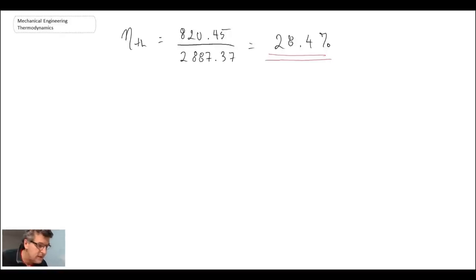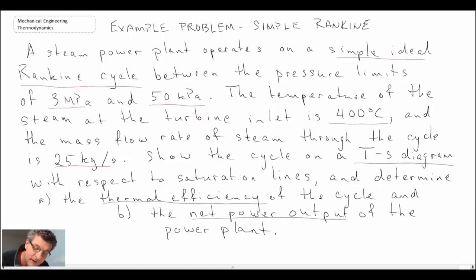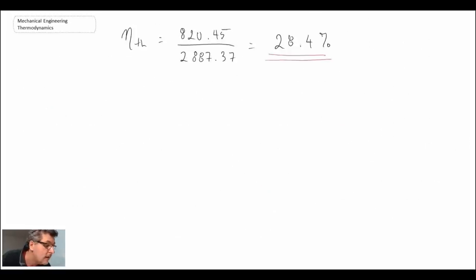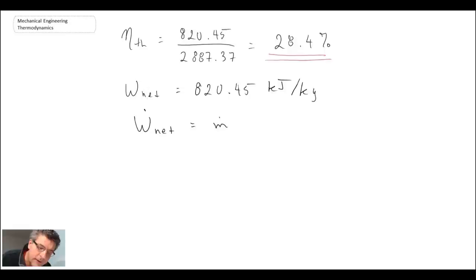That was the first part of the problem. The next thing they want us to do is calculate the net power output. From before, we wrote work net was 820.45 kilojoules per kilogram. The net work output is just the mass flow rate multiplied by the work per unit mass that we just calculated. What we get is that this plant has a power output of 20.511 megawatts.